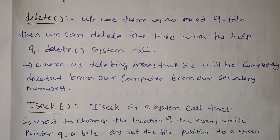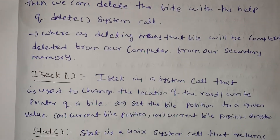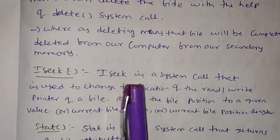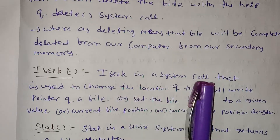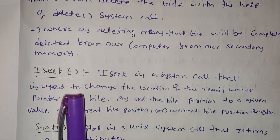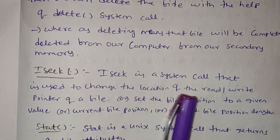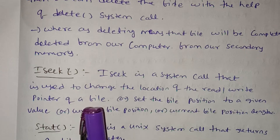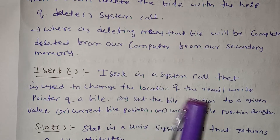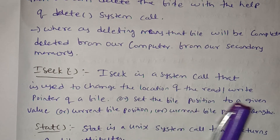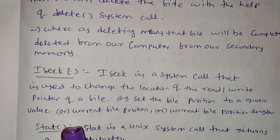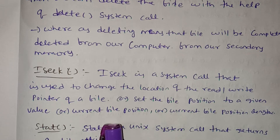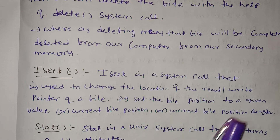Now we have the lseek system call. Lseek is a system call that is used to change the location of the read-write pointer of a file, or to set the file position to a given value. It is used to manage the current file position.